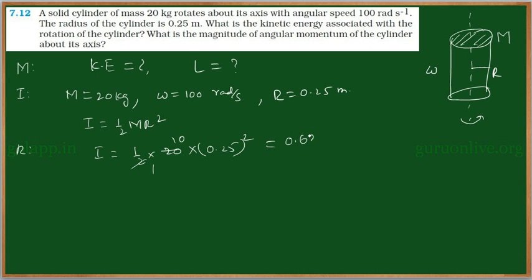And we need to find out the kinetic energy. Generally, for the linear motion, kinetic energy is equal to half MV square. For the bodies which are under rotational motion, the kinetic energy is equal to half I omega square.